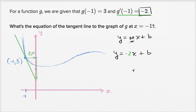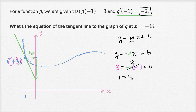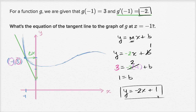Let's substitute negative one and three for x and y. When y equals three: three equals negative two times negative one plus b. Negative two times negative one is positive two. Subtracting two from both sides, you get one equals b. So the equation of our line is y equals negative two x plus one. You could also write the line in point-slope form or standard form, but this is the way my brain likes to process it.